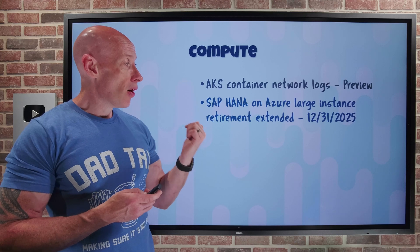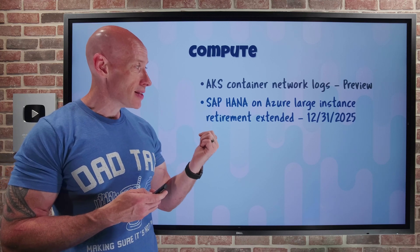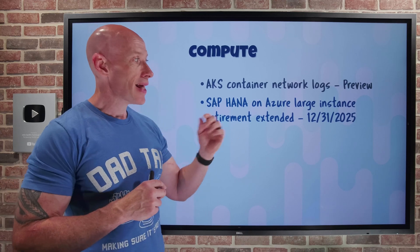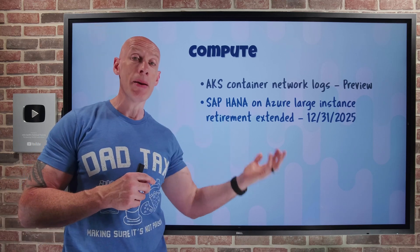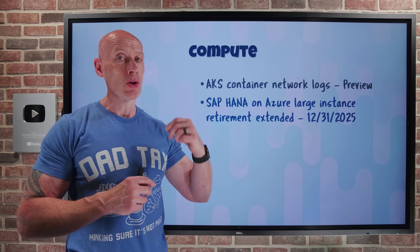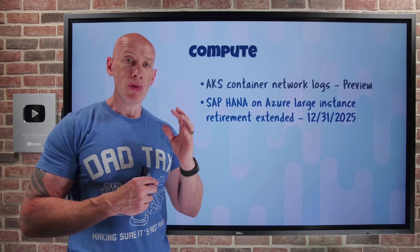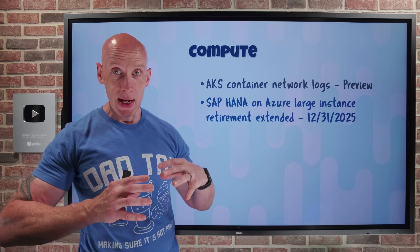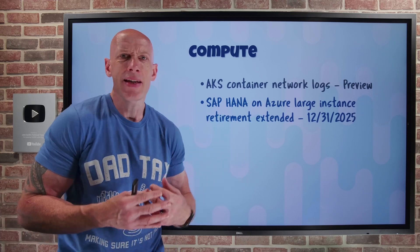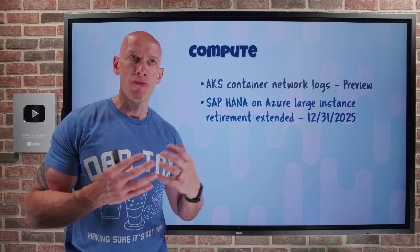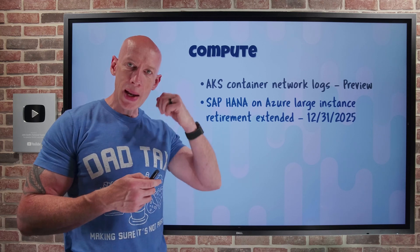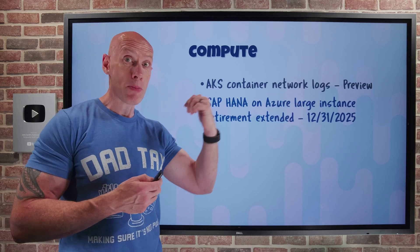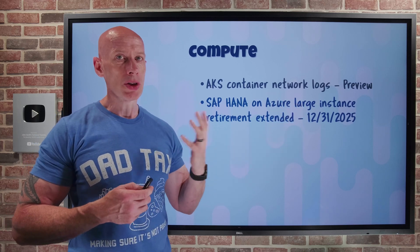On SAP HANA for Azure large instances — they were originally retiring end of June 2025, but that has been extended to end of December 2025. This gives you a bit more time to migrate. What you really want to do is move to SAP-certified regular Azure VM sizes, as there are now massive Azure VM SKUs available. You still want to prioritize that migration, but you have a little more time.